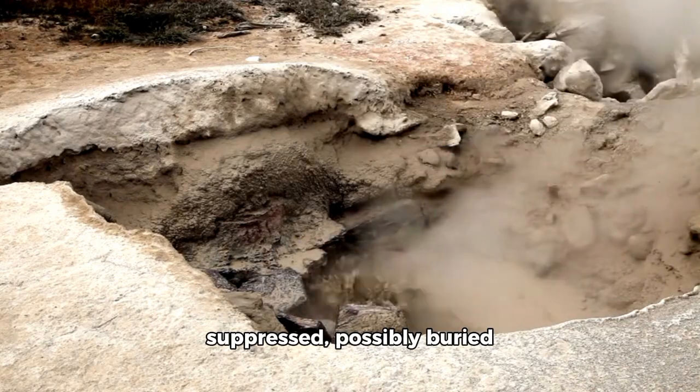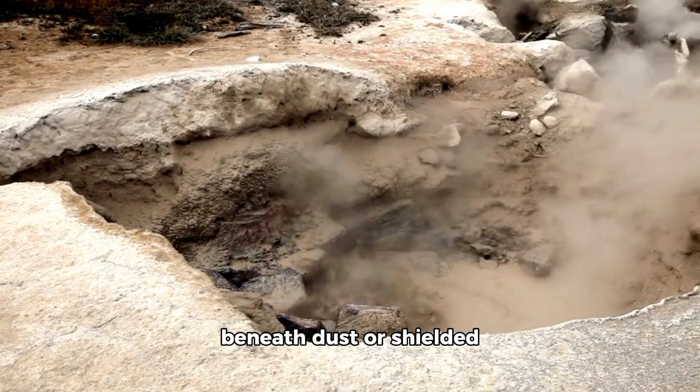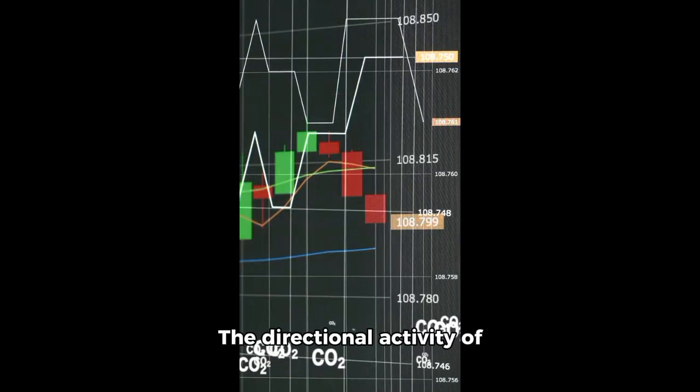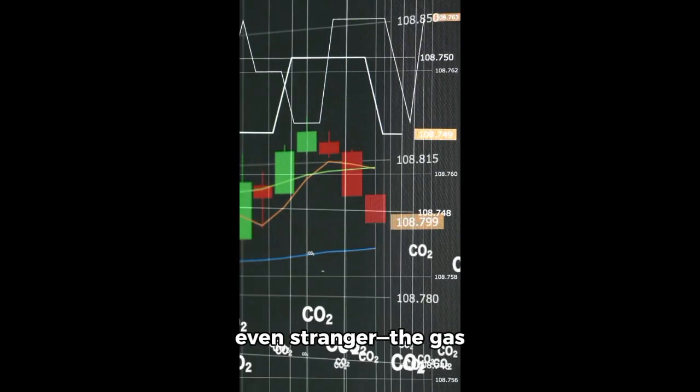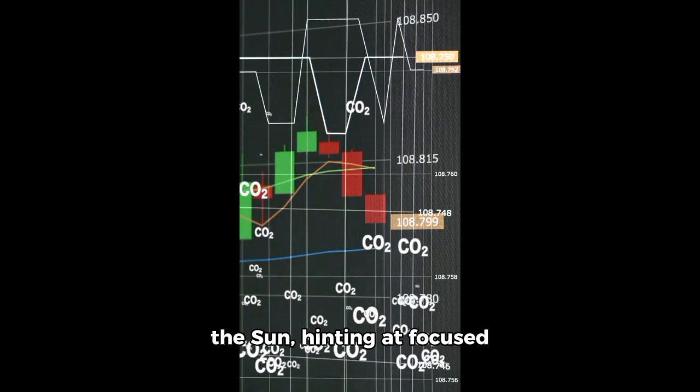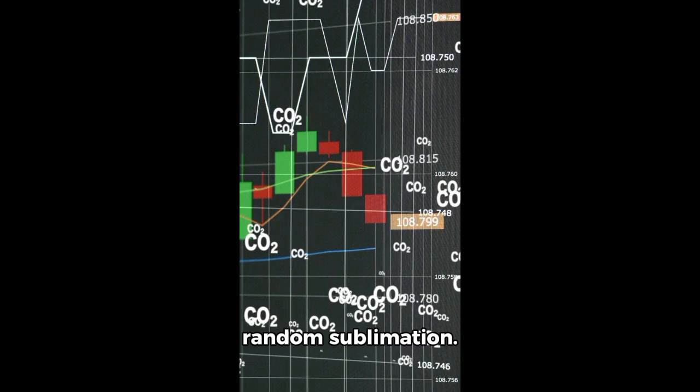However, water vapor was suppressed, possibly buried beneath dust or shielded within its structure. The directional activity of the emissions made things even stranger. The gas escaped predominantly toward the sun, hinting at focused outgassing rather than random sublimation.